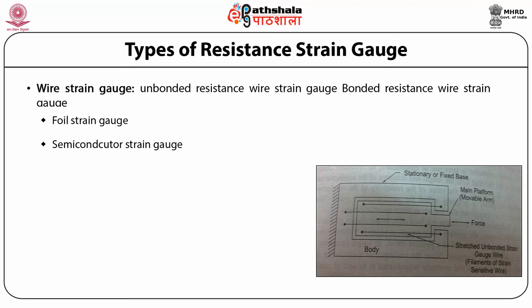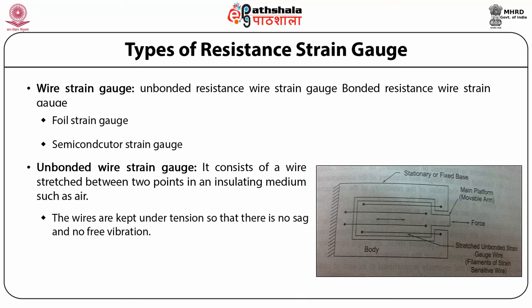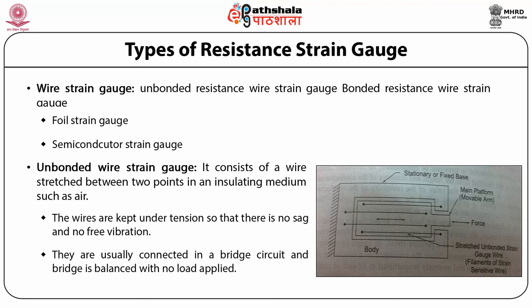The unbonded wire strain gauge consists of a wire stretched between two points in an insulating medium such as air. The wires are kept under tension so that there is no sag and no free vibration. They are usually connected in a bridge circuit and the bridge is balanced with no load applied.